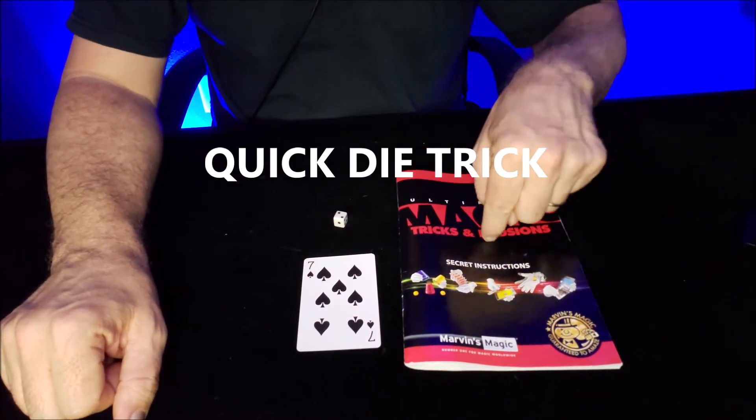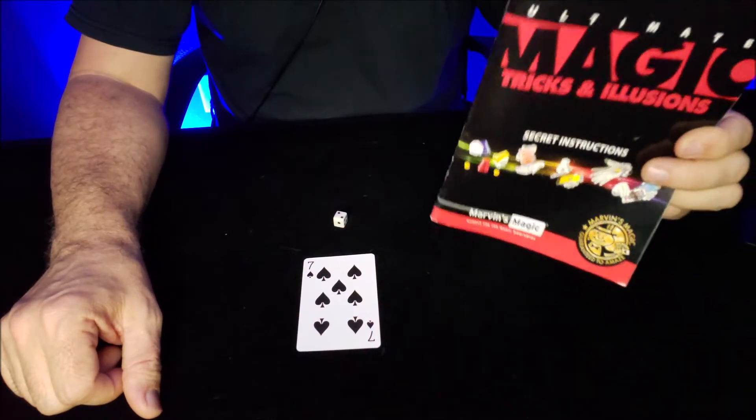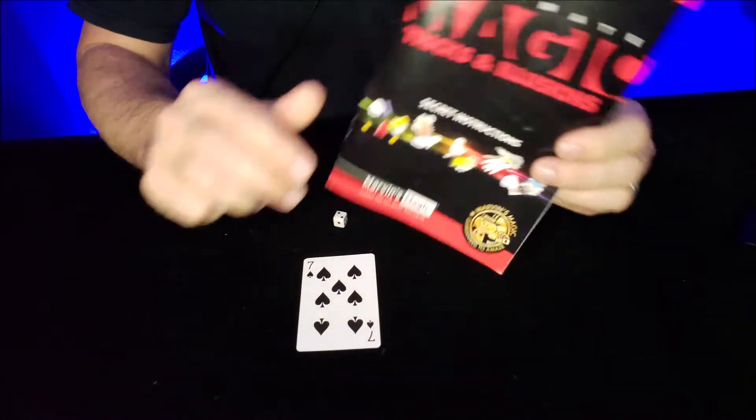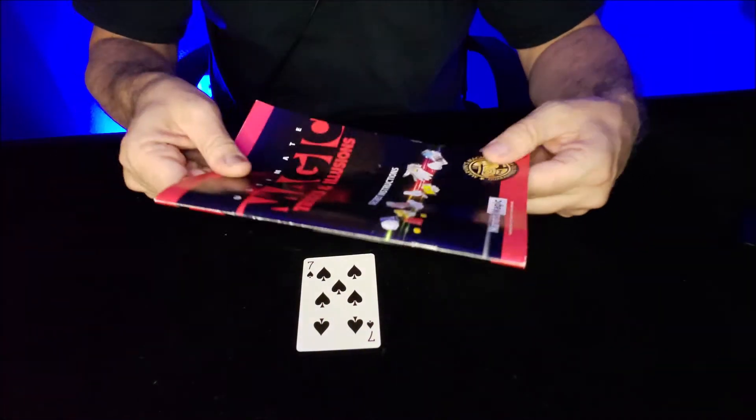The Quick Die Trick is on page one of your Marvin's Magic Tricks and Illusions kit. You can find the instructions right there on page one, but you don't need them because you got me.